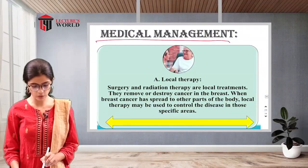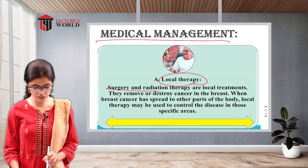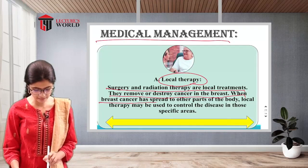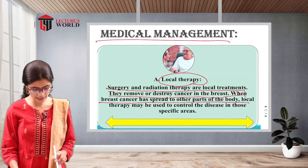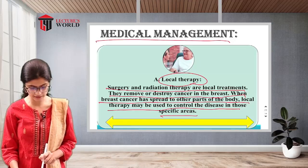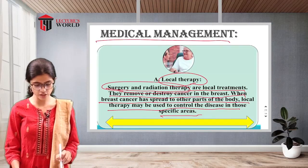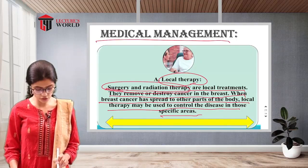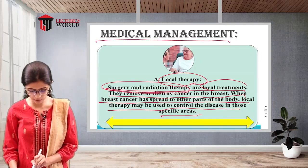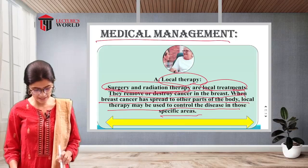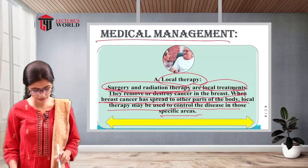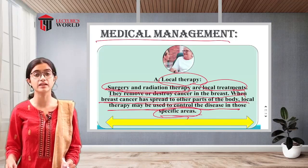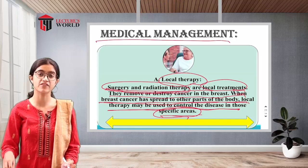Medical management includes local therapy and systemic therapy. Local therapy — surgery and radiation therapy — removes or destroys cancer in the breast. When breast cancer has spread to other parts of the body, local therapy may be used to control the disease in those specific areas.